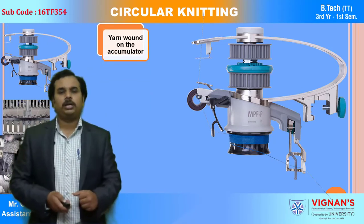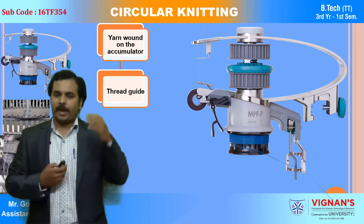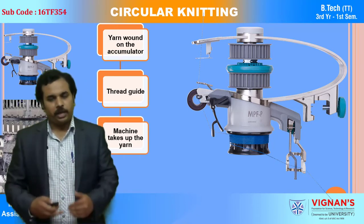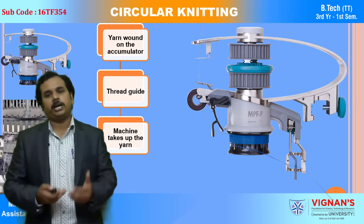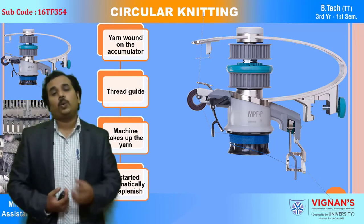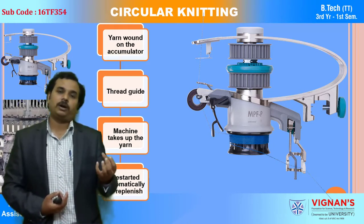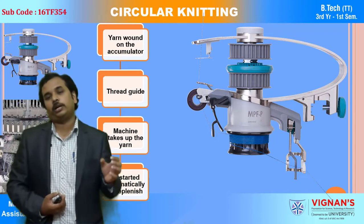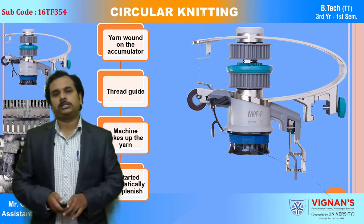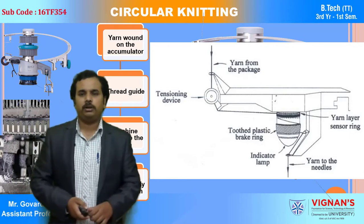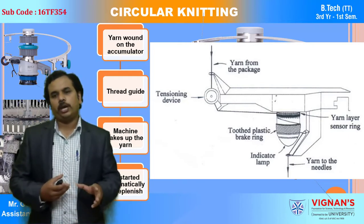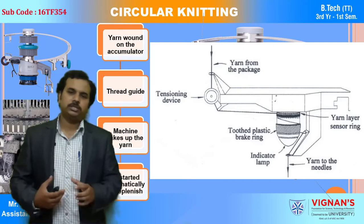The yarn wound on the accumulator is then conveyed to the thread guide, always maintaining the same tension. The machine gradually empties the accumulator by taking up the yarn. Once a certain length of yarn is unwound from the accumulator, the accumulator again winds yarn from the package. From the package the yarn is coming and winding onto the wheel; from the wheel the yarn is delivered into the feeding system — feed guide to the needles.